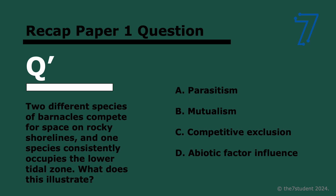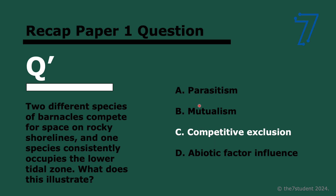Last question: two different species of barnacles compete for space on rocky shorelines, and one species consistently occupies the lower tidal zone. What does this illustrate? The answer is competitive exclusion. It's not parasitism — there's nothing indicating one organism uses the other for its own benefit at the other's expense. It's not mutualism — there's nothing saying both benefit. And there's nothing about abiotic factor influence. Both species are competing for the same space, but one consistently out-competes the other, excluding it from that area.